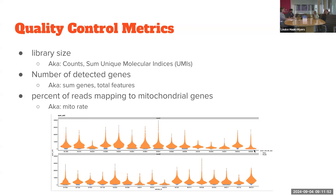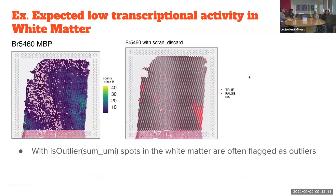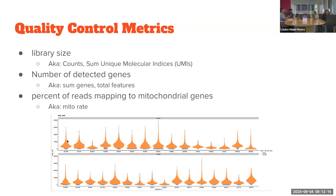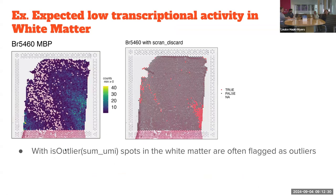Looking at sum of UMIs across a bunch of different Visium slides, almost all of them have some spots with very low UMIs. For single-nucleus data we'd just drop these bottom spots. We've typically used scran's isOutlier, which finds spots three MADs from the median — a sample-specific distribution cutoff that works pretty well for single-nucleus data. However, we're finding that it's pretty aggressive when it comes to spatial data.